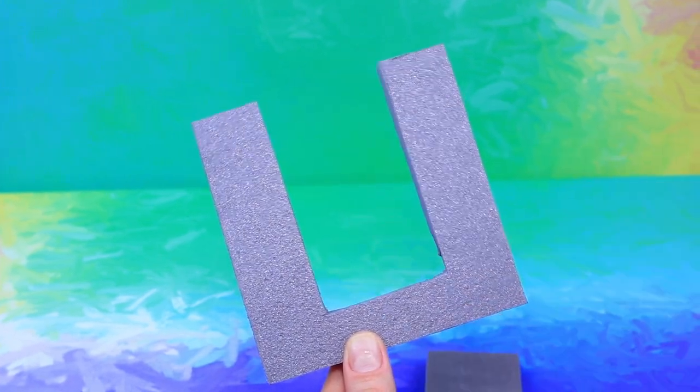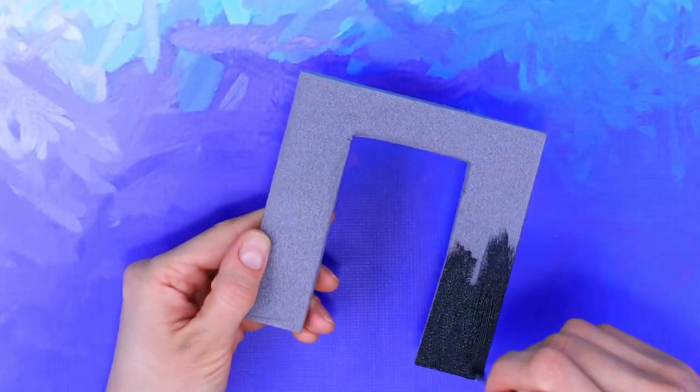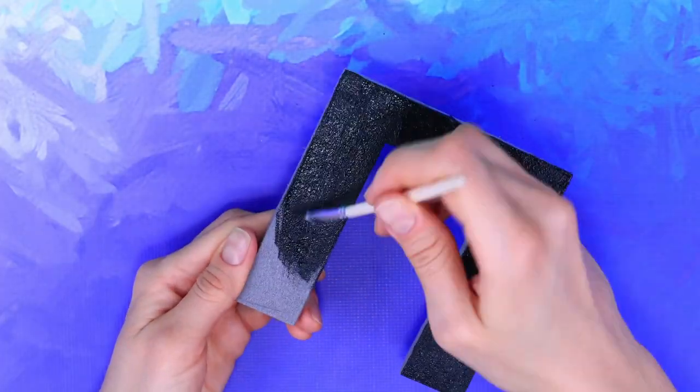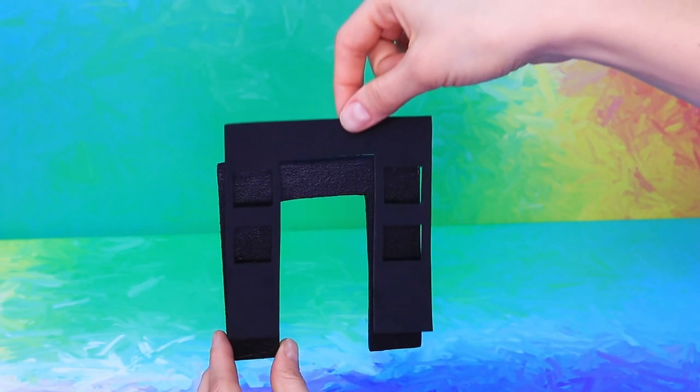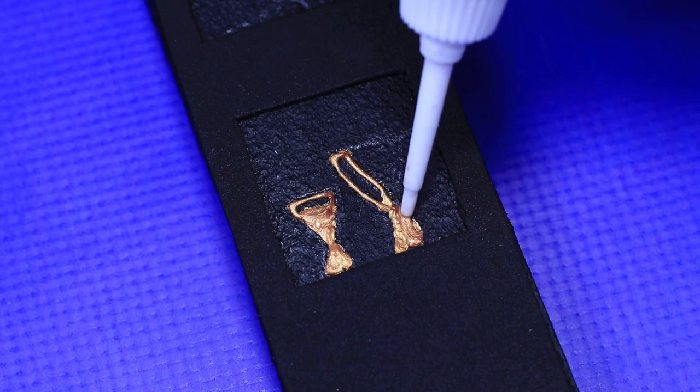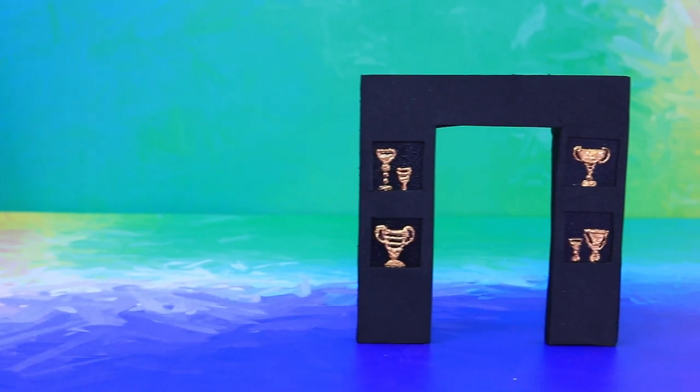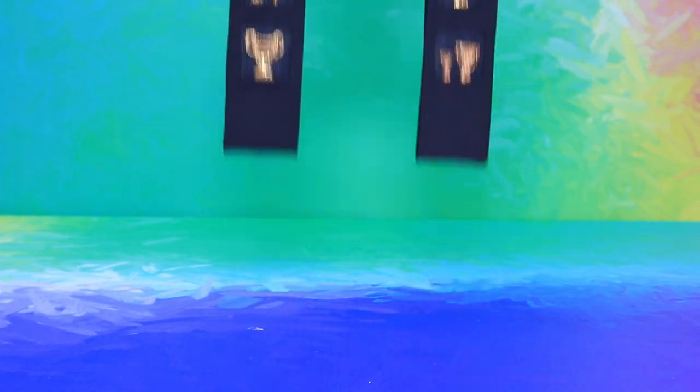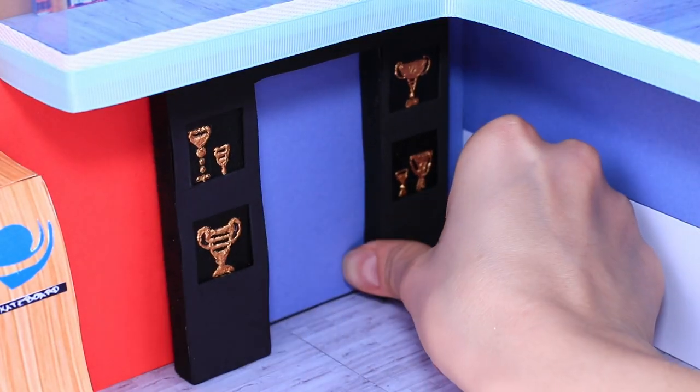Cut out a square stand. Add a foam paper pad with openings. Wow, there are so many shelves. There are gold cups on each of them. Install a stand with prizes along the wall.